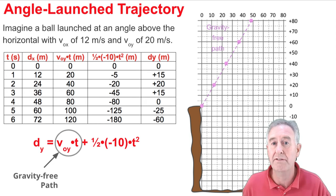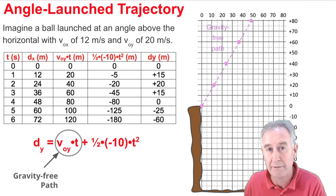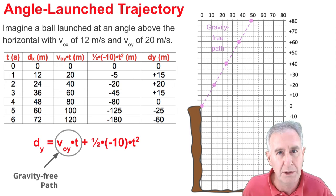But the second term tells us the effect of gravity. And if we look in that column for that term, it's the second from the right, we notice the numbers 5, 20, 45, 80, the magic numbers.